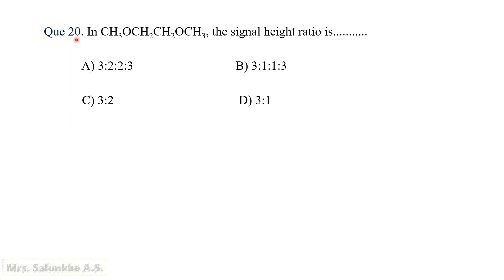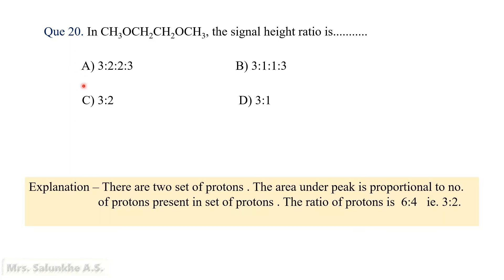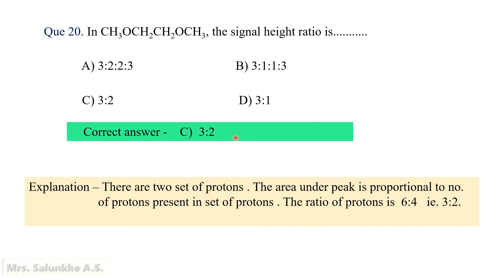Question 20: In CH3OCH2CH2CH2OCH3, the signal height ratio is — what? In this molecule there are 2 sets of protons: methyl group protons (6 protons) and methylene group protons (6 total, but arranged as a set of 4 equivalent ones vs. the methoxy methyls). The ratio of protons is 6 to 4, i.e., 3 to 2. In PMR spectroscopy, the area under the peak is proportional to the number of protons in that set. Thus, the correct answer is 3:2, indicating the signal height ratio reflects the ratio of protons in the molecule.